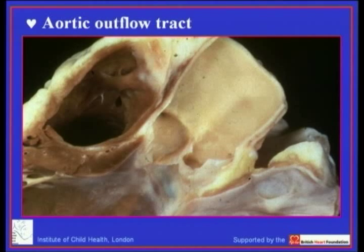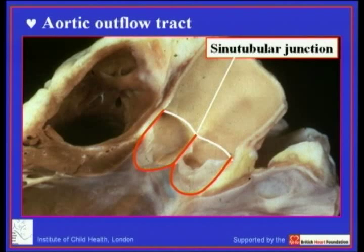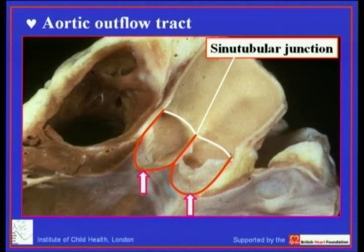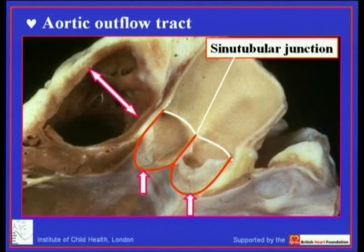We can then extend that concept to the aortic outflow tract, remembering that only two of the leaflets are supported by muscle. They still have their distal attachments at the sinutubular junction, but it is only those sinuses facing the pulmonary trunk that have muscle at the base of the sinus. In the non-coronary sinus of the aortic root there is fibrous continuity between the leaflets of the aortic valve and the leaflet of the mitral valve, and we believe this difference in leaflet attachments conditions the form of aortic stenosis.